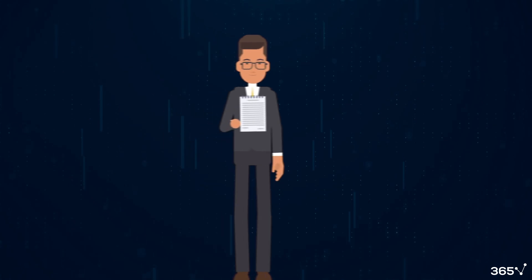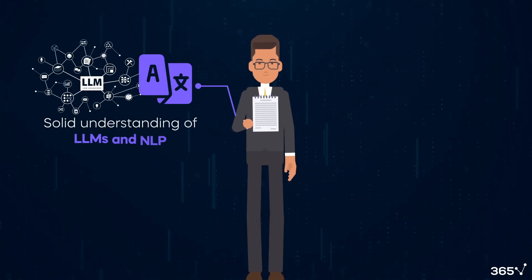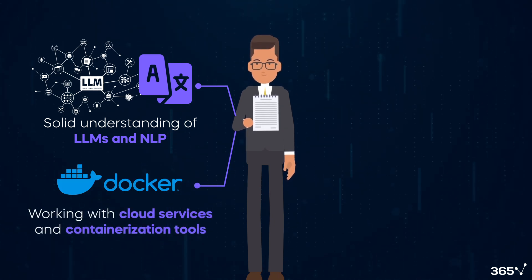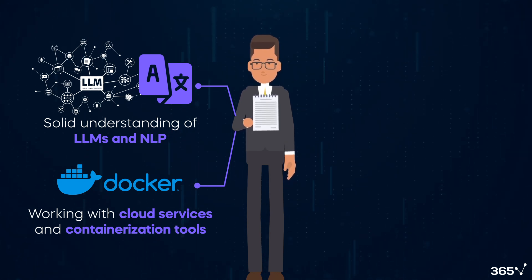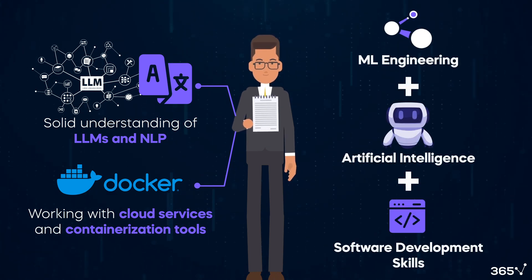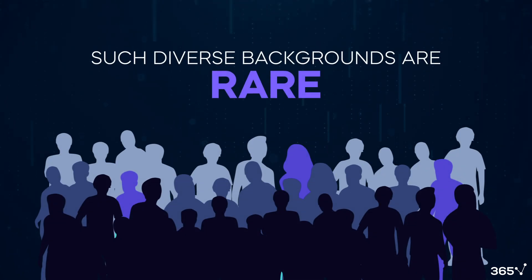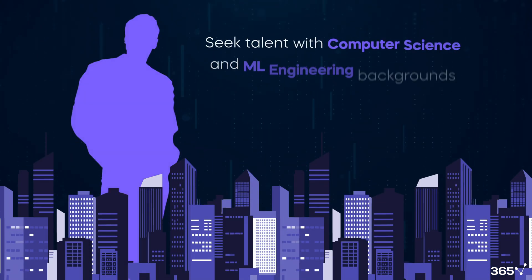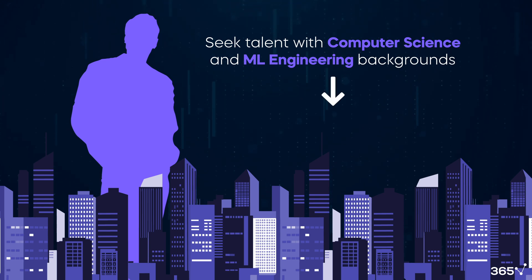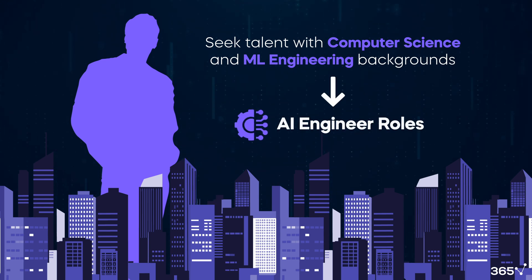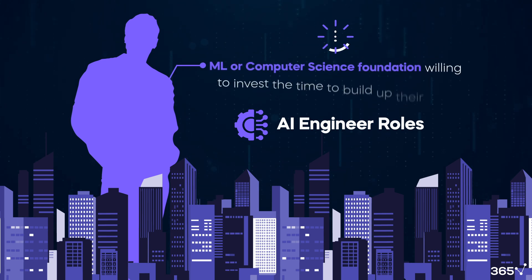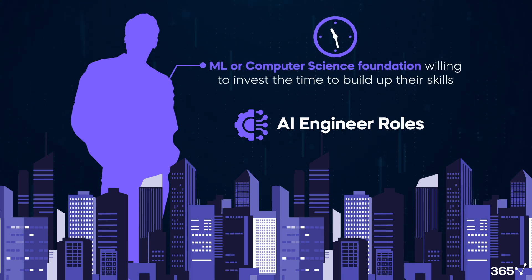Another critical skill AI engineers need is a solid understanding of LLMs and NLP. They can also benefit significantly from working with cloud services and containerization tools like Docker. Finally, to be a full-stack AI engineer, an individual must combine ML engineering, AI, and software development skills. Such diverse backgrounds are rare, but many companies seek talent with computer science and ML engineering backgrounds to fill AI engineering roles. They're often looking for a talented individual with an ML or computer science foundation willing to invest the time to build up their skills in the area they lack.